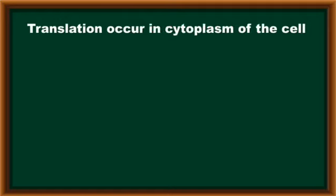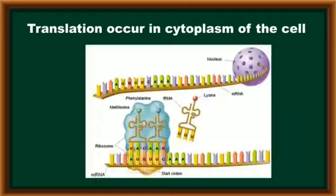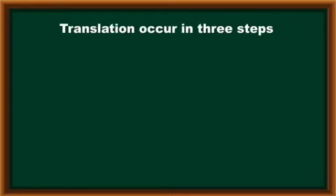During translation, the entire process generally occurs in cytoplasm of the cell in both prokaryotes and eukaryotes. In prokaryotes, DNA is directly present in cytoplasm and it forms mRNA molecule, which directly participates in translation. But in eukaryotes, the transcription process occurs inside the nucleus to form mRNA molecule. This mRNA molecule comes to outside of the nucleus through minute pores present in nuclear membrane, and then participates in translation for the synthesis of protein molecules. The translation process generally occurs in three steps.